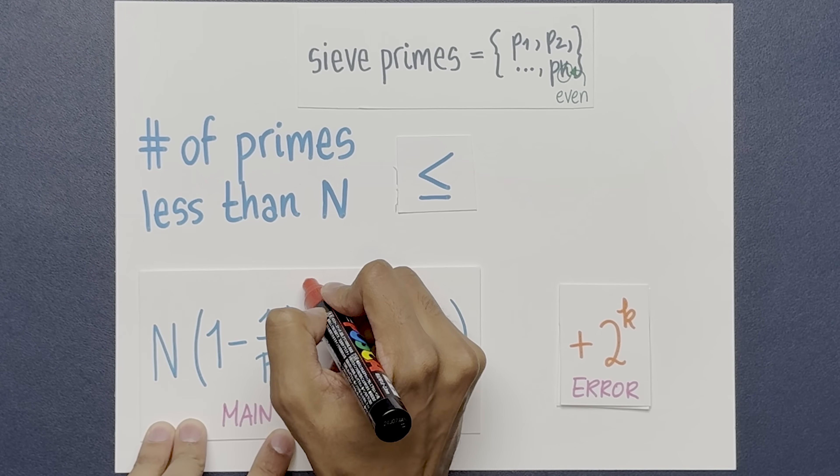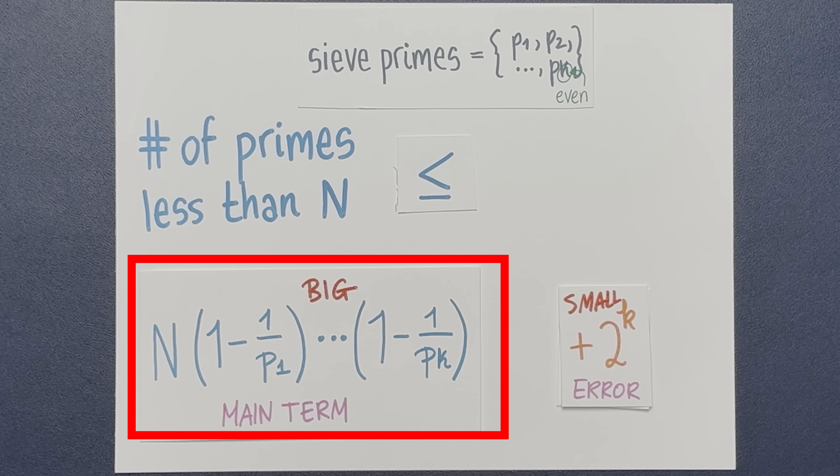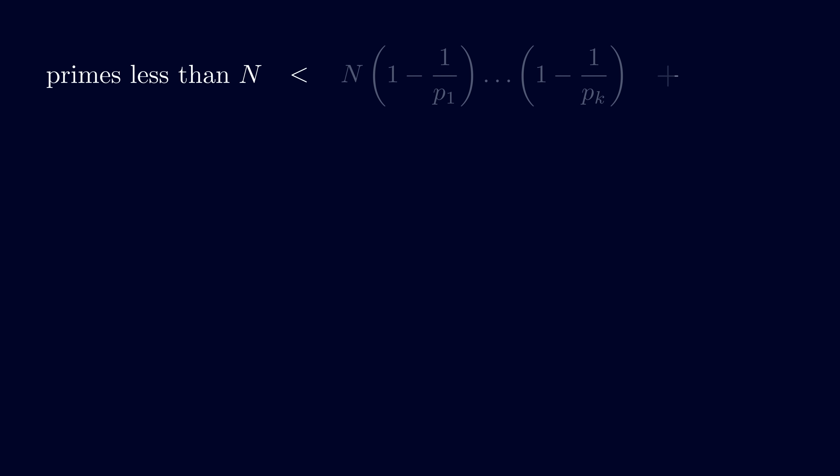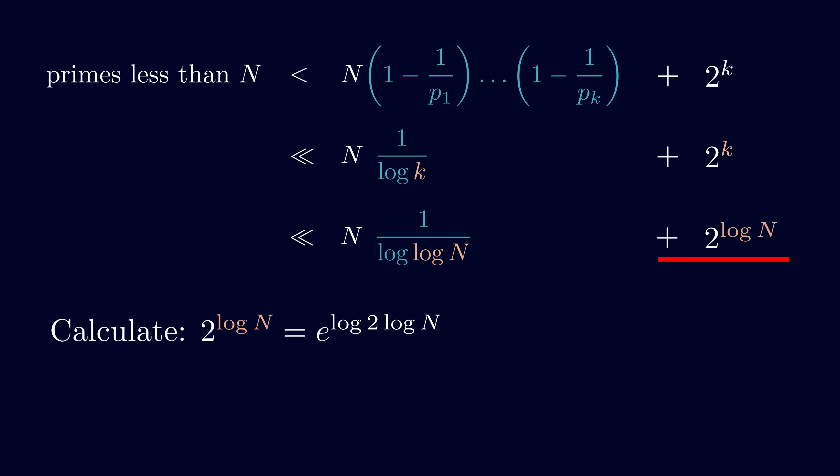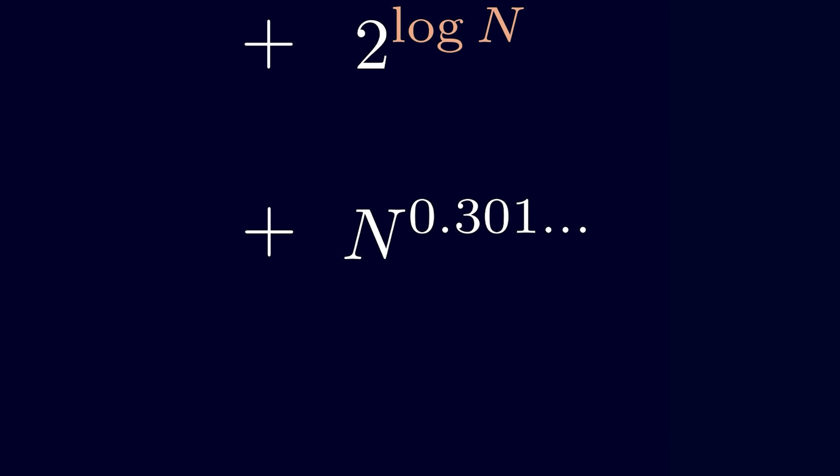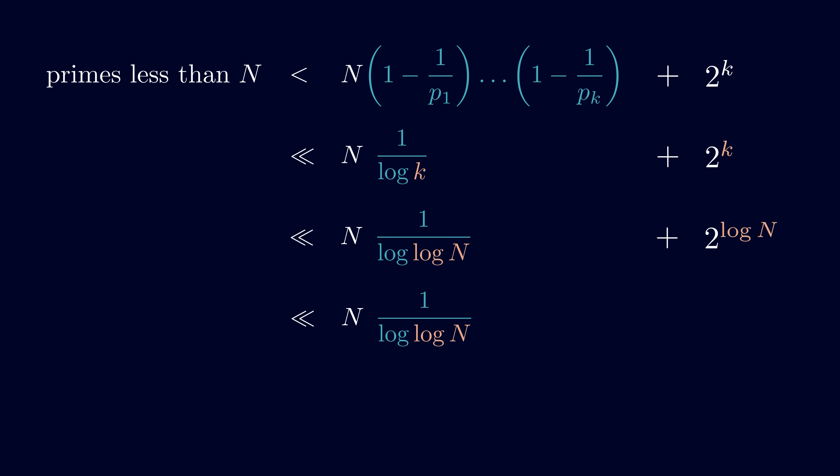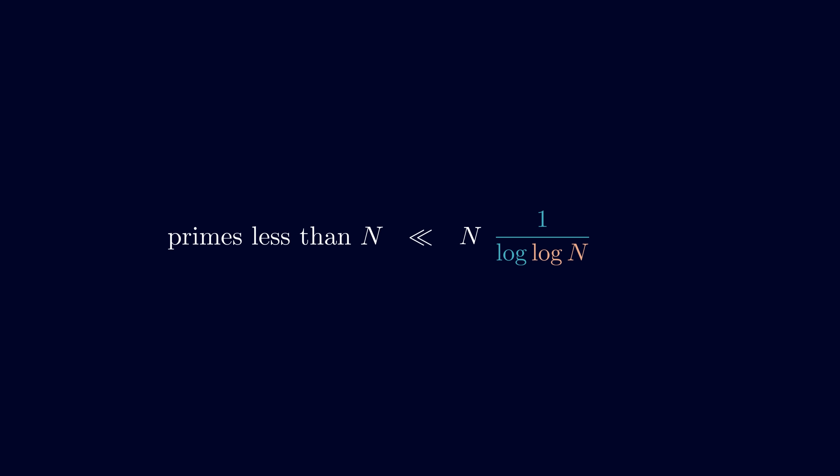This is the main term and this is the error term. We need to choose k so that the main term is big and the error term is small. To control the main term, I'm going to introduce a result that we'll take as a black box. The mathematician Franz Mertens proved that this product is dominated by 1 over log k. The number of primes less than n is at most this product plus 2 to the k. So we can replace the product in our expression with 1 over log k. Well, the main term grows exponentially. So to cancel that out, let k equal the logarithm of n. If we do that, we get this. We can simplify the second term using some algebra. It becomes approximately n to the 0.301 dot dot dot. Now the error term is dominated by the much larger main term, so we could just drop the error term.